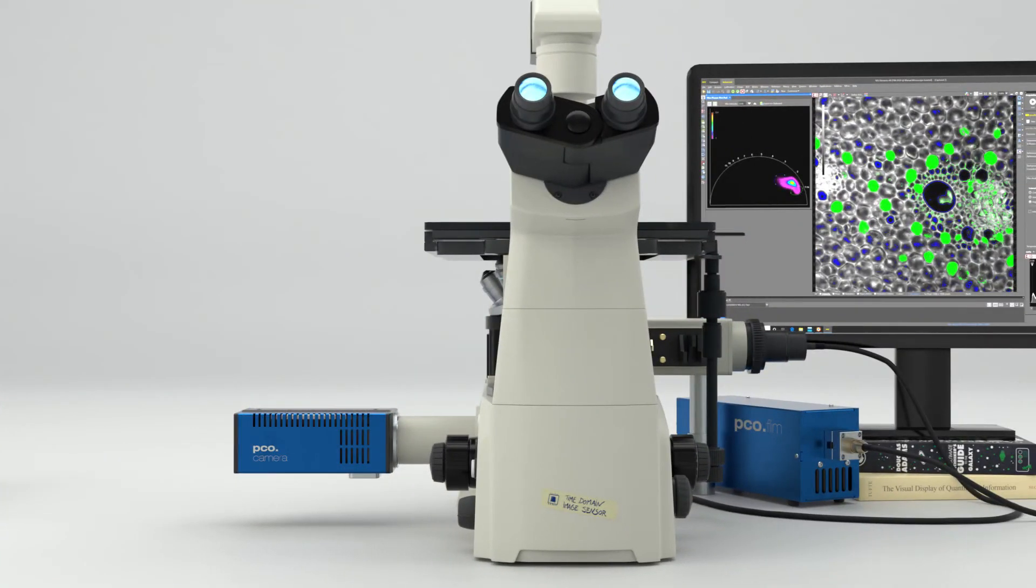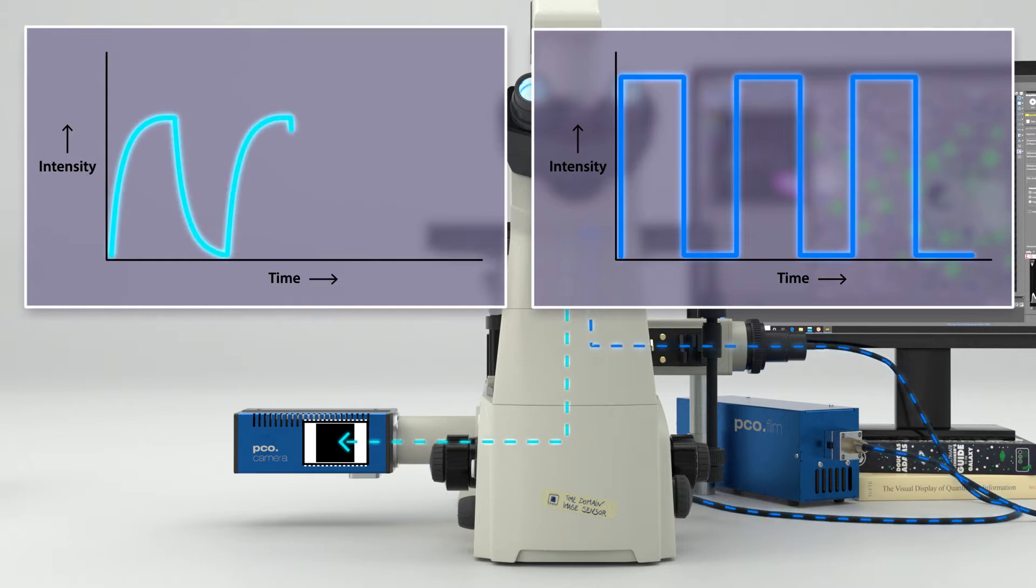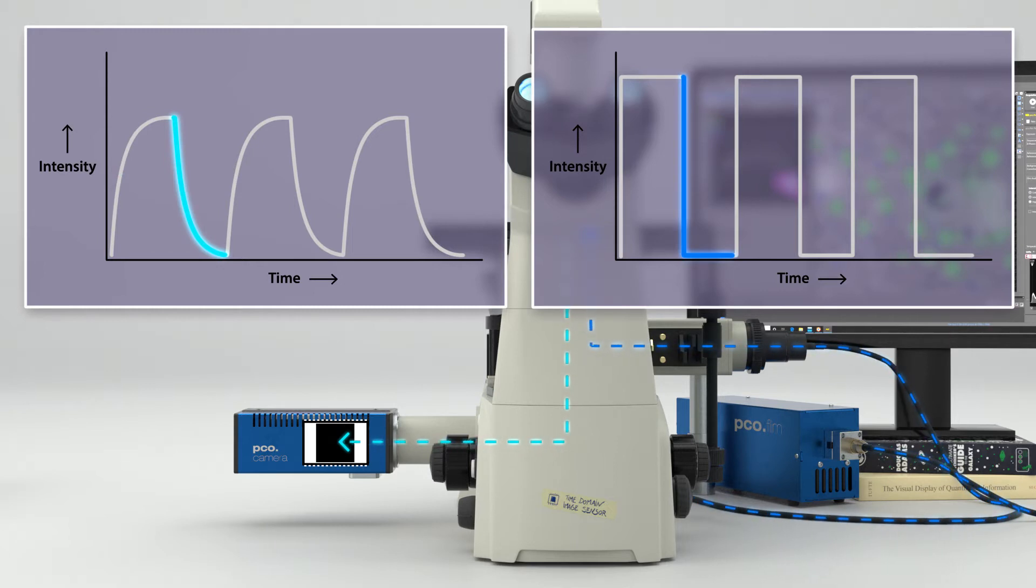Another kind of time domain FLIM uses a digital image sensor. In this setup, the sample is excited by a period train of rectangular light pulses. Each excitation pulse results in a slightly delayed, weaker emission signal, starting with a sloped rise of the emission intensity giving the rise time, and a decaying emission after the excitation light has been turned off giving the fall time.